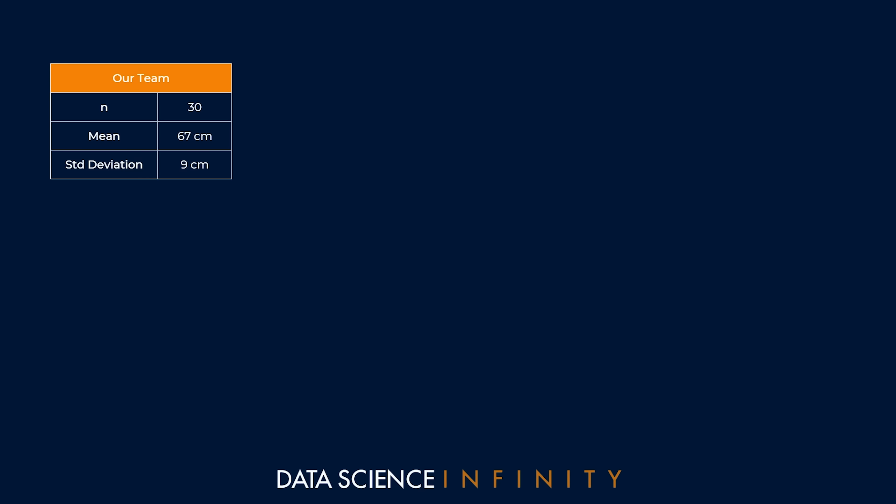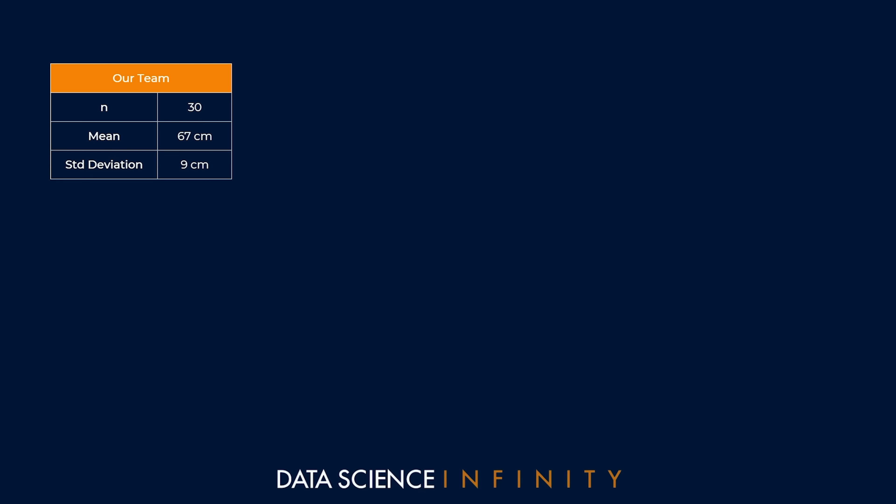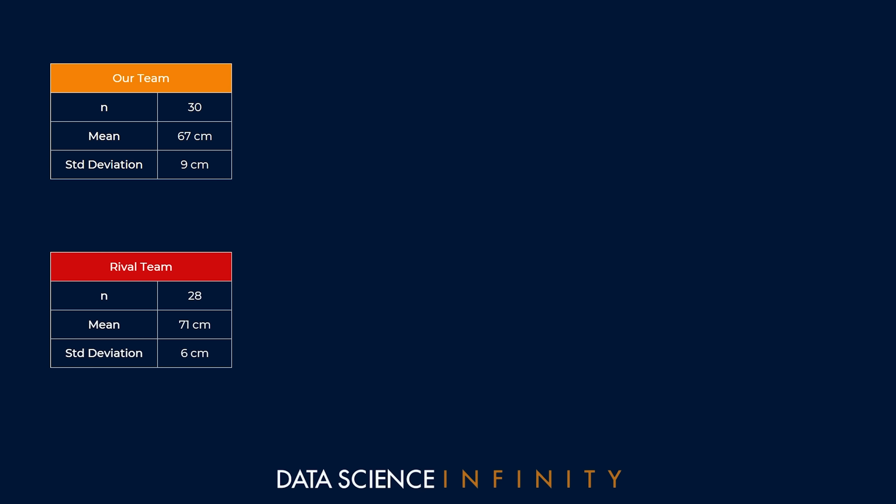From the test we ran in the last video, we know we have 30 players in our squad with a mean vertical leap of 67 centimeters and a standard deviation of 9 centimeters. Our rivals have 28 players with a mean vertical leap of 71 centimeters and a standard deviation of 6 centimeters. While on the surface our team appears to be lagging behind, we want to understand if this is a robust conclusion or if the difference could be down to chance.